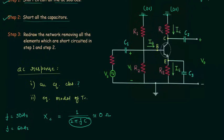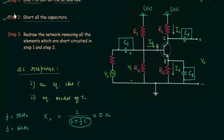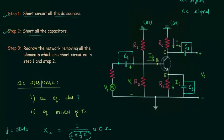So I will short circuit C1 like this. Then I will short circuit C2 like this. And finally we will short circuit the third capacitor C3. We are done with step number one and step number two.